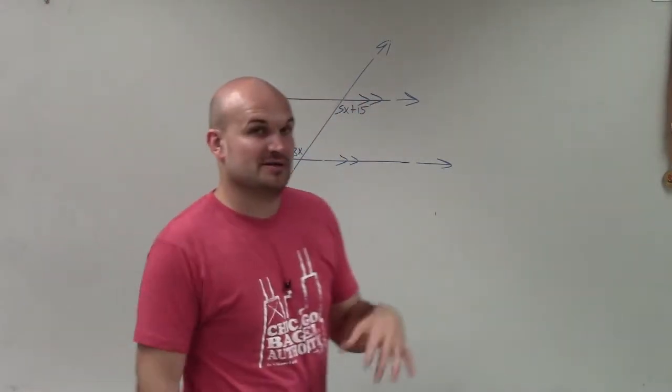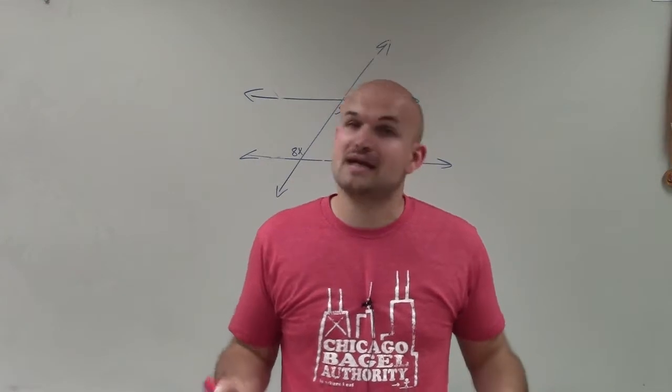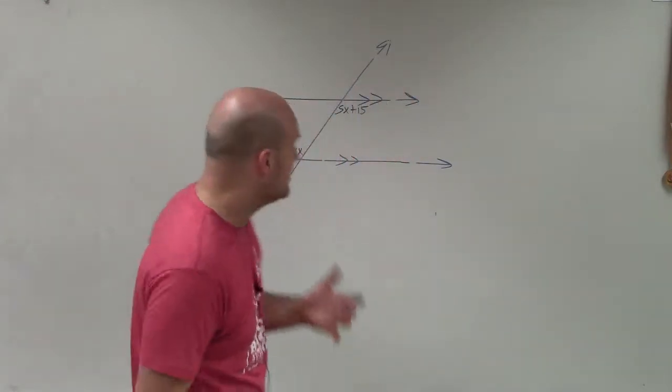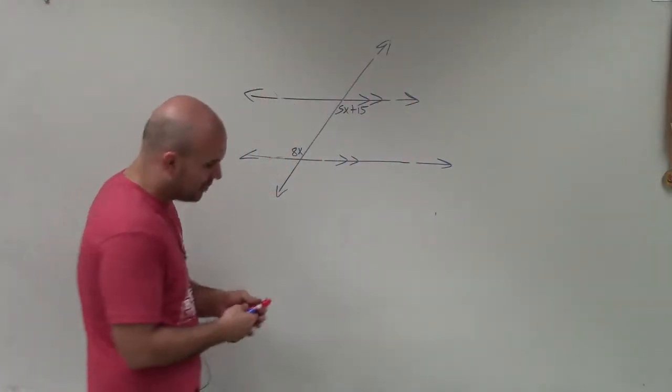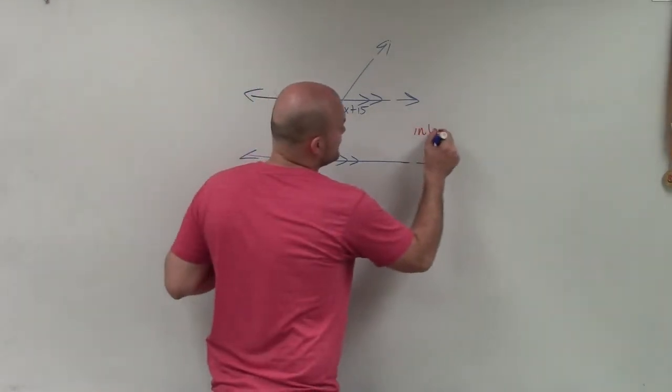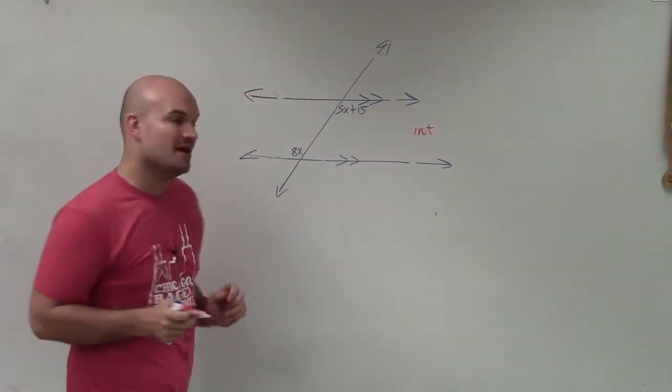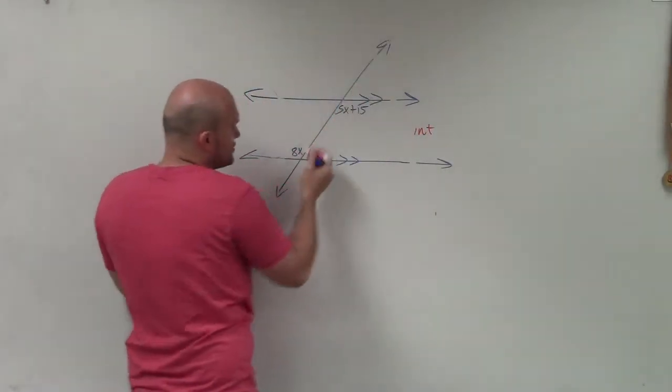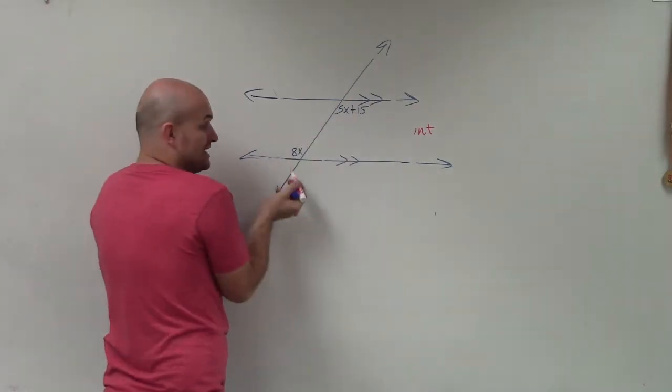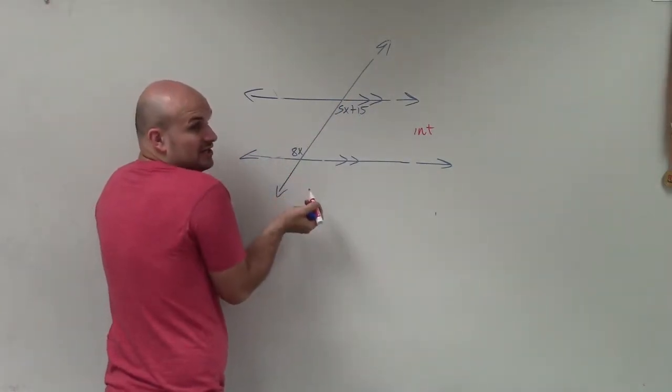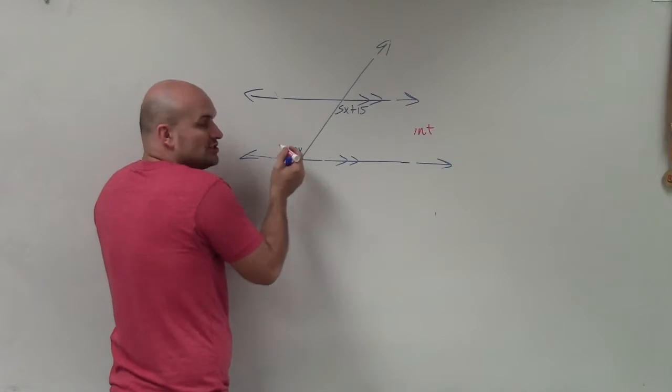Now, the next thing I want to do is identify what type of angle relationships I have. We notice that both of these angles are on the interior of the parallel lines. And I also notice of the transversal, they're not on the same side. So they can't be same side interior. The only other one that were both interior was alternate interior.